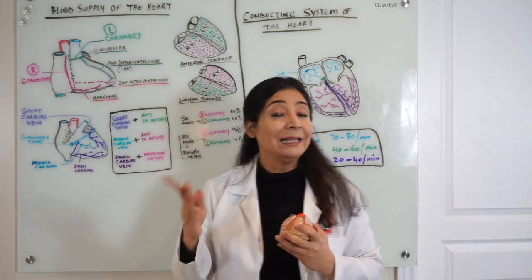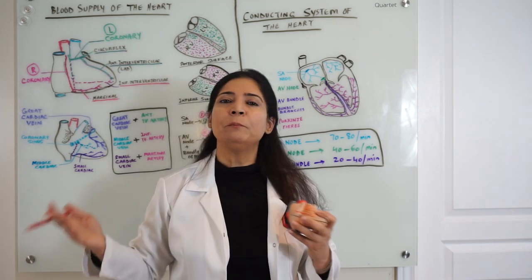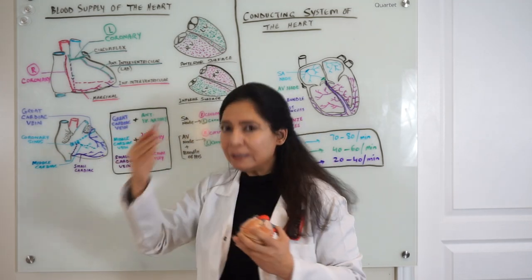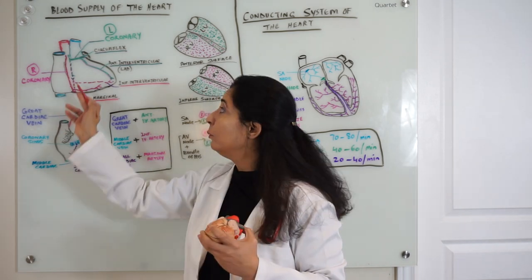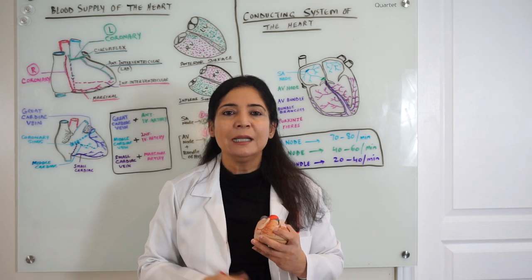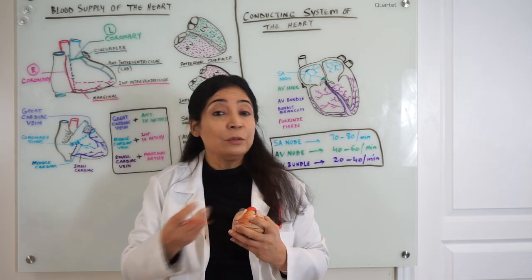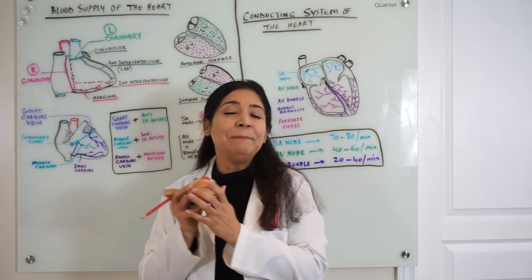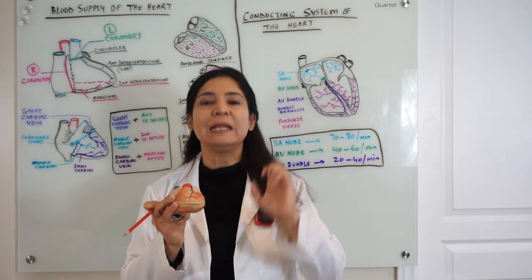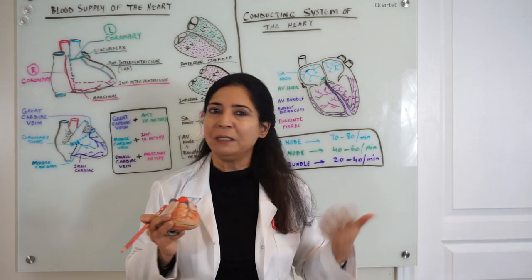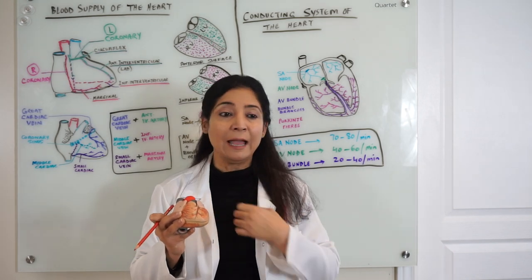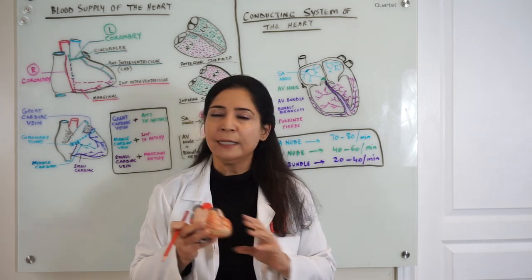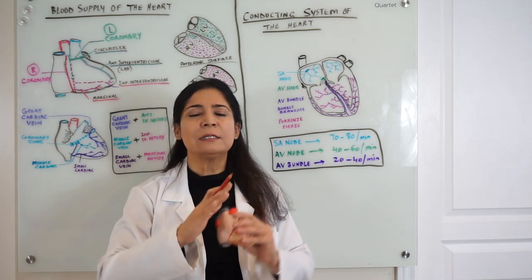These anastomoses play an important role when a blockade develops slowly over years — the anastomotic channels will open up to bypass the obstruction and save that person's life. Unfortunately it doesn't happen very often; blockades are usually sudden and abrupt, leading to death of the part of the myocardium supplied by that branch.